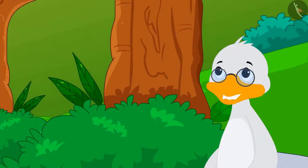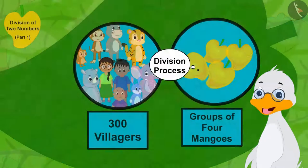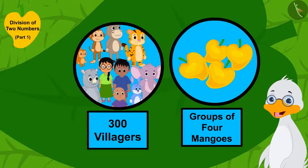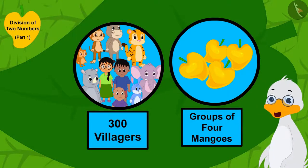I can do this by using the division process. I can divide these mangoes equally among 300 villagers by putting them in groups of four mangoes.